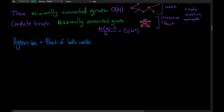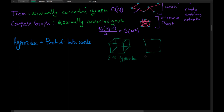This is where we introduce the notion of a hypercube, which gets you the best of both worlds. Let's start with an actual cube, which is the three-dimensional instantiation of a hypercube. We can generalize to lower dimensions: a two-dimensional hypercube is a square, and a one-dimensional hypercube is just a line segment. Hypercubes are a really efficient way of connecting nodes.